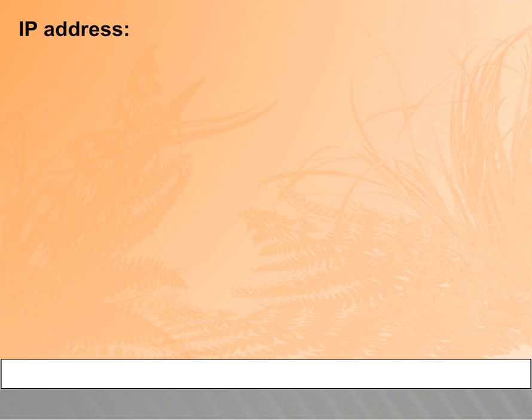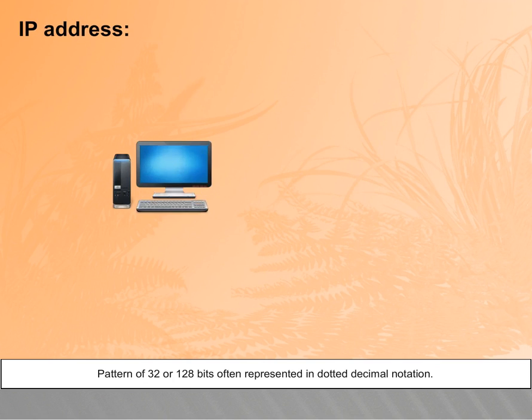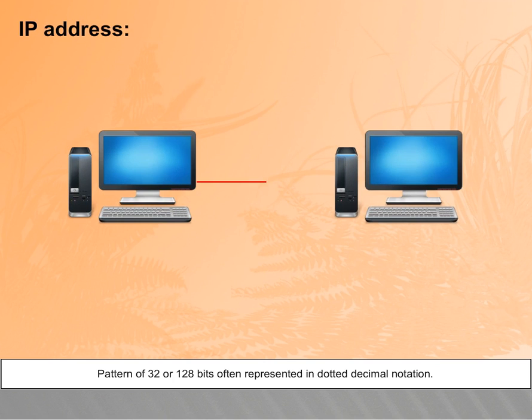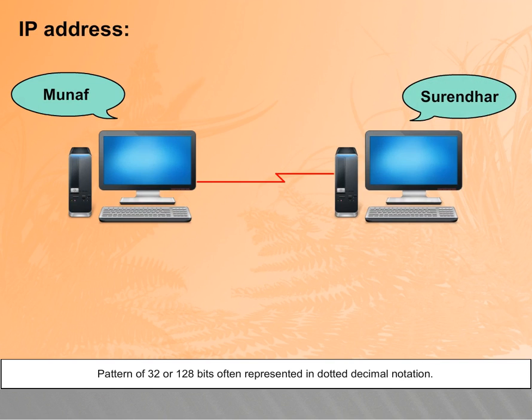An IP address is a pattern of 32 or 128 bits, often represented in dotted decimal notation.